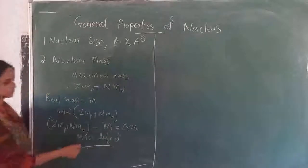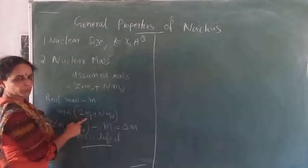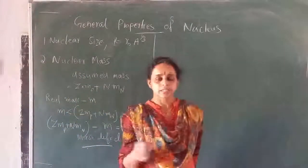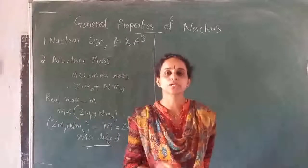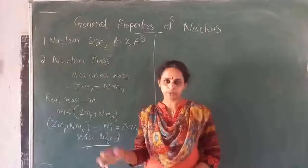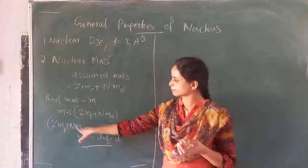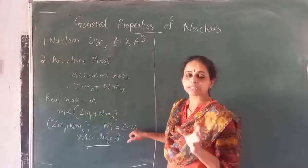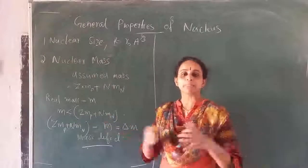The nuclear mass is always less than the sum of the proton masses plus the neutron masses — that is, less than the total mass of the nucleons. This defect actually accounts for the binding energy of the nucleus. This much energy we have to supply — corresponding to the mass defect — in order to separate the nucleons of the nucleus.